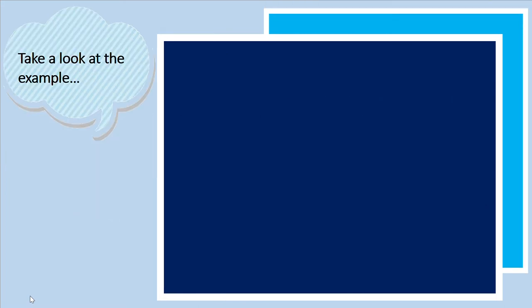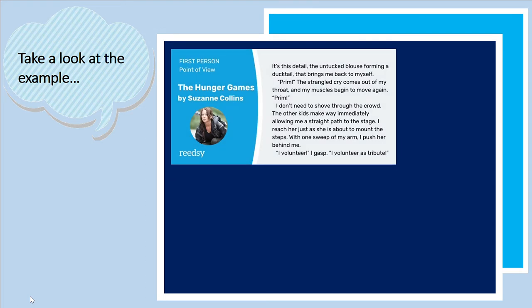An example of first person POV is from The Hunger Games by Suzanne Collins. Take note of the pronouns: 'It's this detail, the untucked blouse forming a ducktail, that brings me back to myself. Prim — the strangled cry comes out of my throat, and my muscles begin to move again.' The character herself is the narrator of the story.